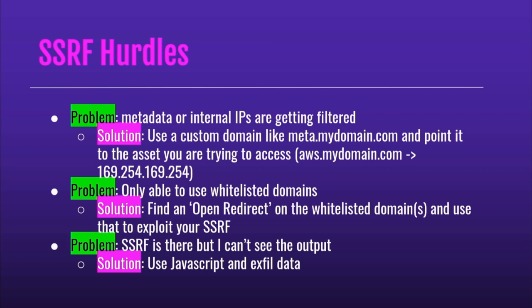But there are a lot of problems when that's not the case. Developers may have blocked access to the AWS metadata IP directly, but you can point your own domain to the metadata and hit it with whatever you're exploiting. Sometimes it's only whitelisted to the target application — if you're hacking site.com, you can only use resources on site.com — so you go find an open redirect and use it against the application. Nine out of ten times, SSRFs we find that are the most impactful are when you have no output and can't see the server's response, but it allows you to execute JavaScript server-side.